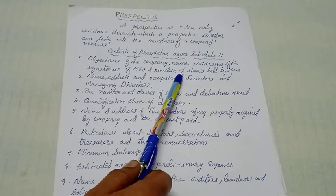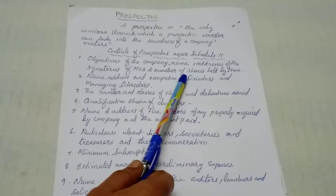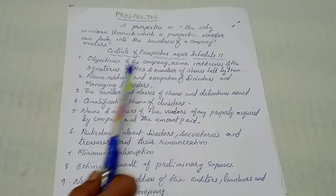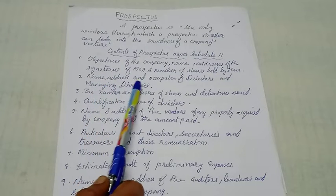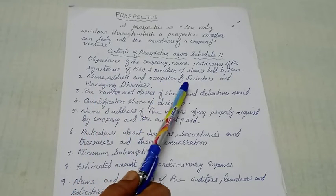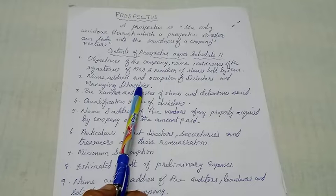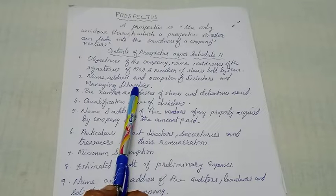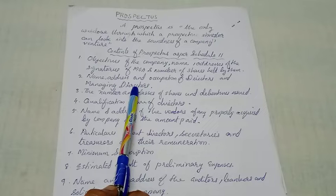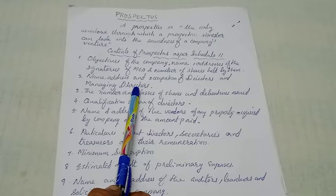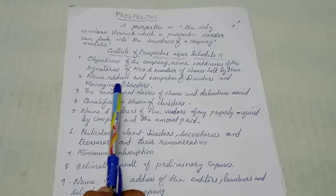The second content is the name, address, and occupation of directors and managing directors. For the directors and managing directors, we need to know what are their objectives, what is their address, what is their name, and what is their occupation.